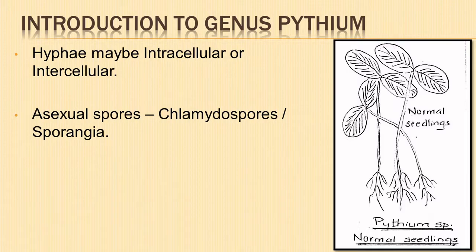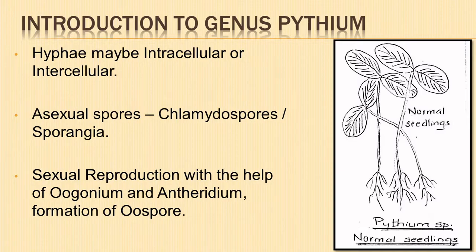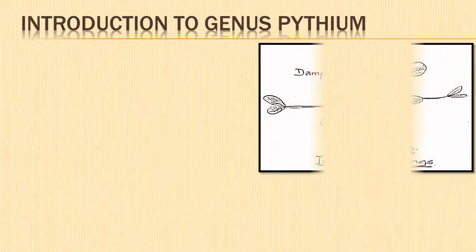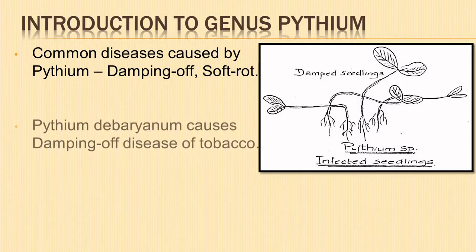The asexual or vegetative stage of Pythium produces thick-walled spores called chlamydospores or sporangia. These may germinate directly to produce hyphae or may indirectly give rise to a vesicle within which the zoospores are formed. Sexual reproduction takes place by fertilization of oogonium by antheridium to produce a thick-walled oospore.